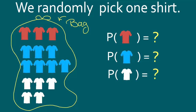This is another simple probability question of bag and style. We have a bag that contains three red t-shirts, seven blue t-shirts, and five white t-shirts. We randomly pick one of the t-shirts from the bag.